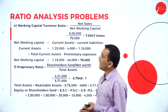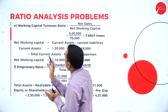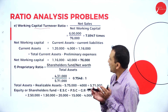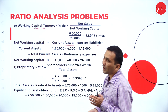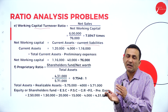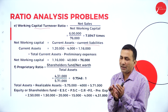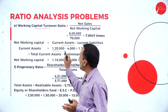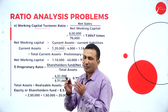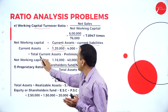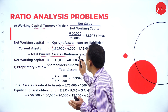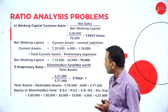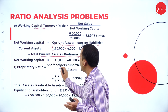Moving to working capital turnover ratio. First, find net working capital: current assets minus current liability. Current assets total is 1,20,000. From this, subtract preliminary expenditure, giving 1,16,000.